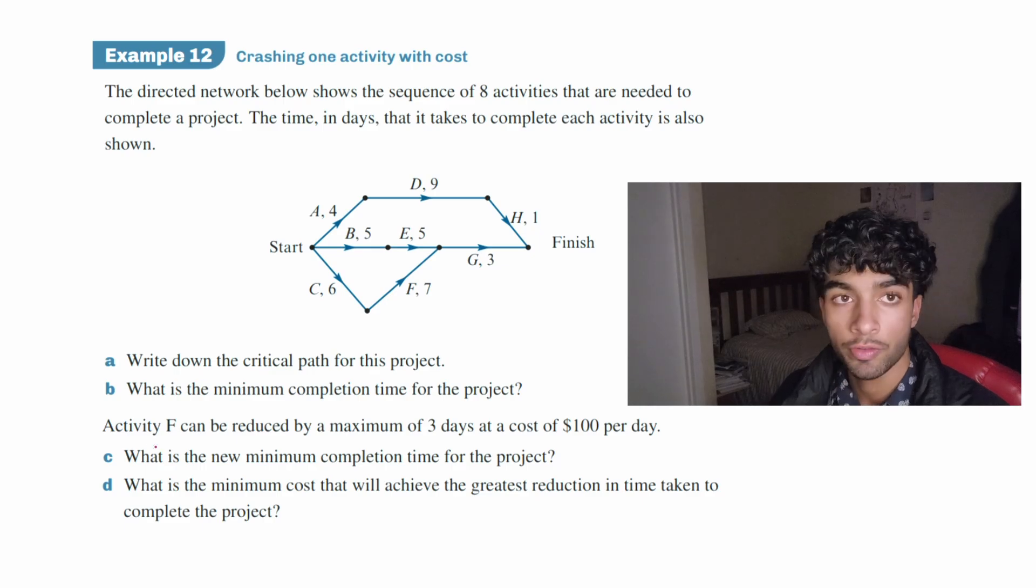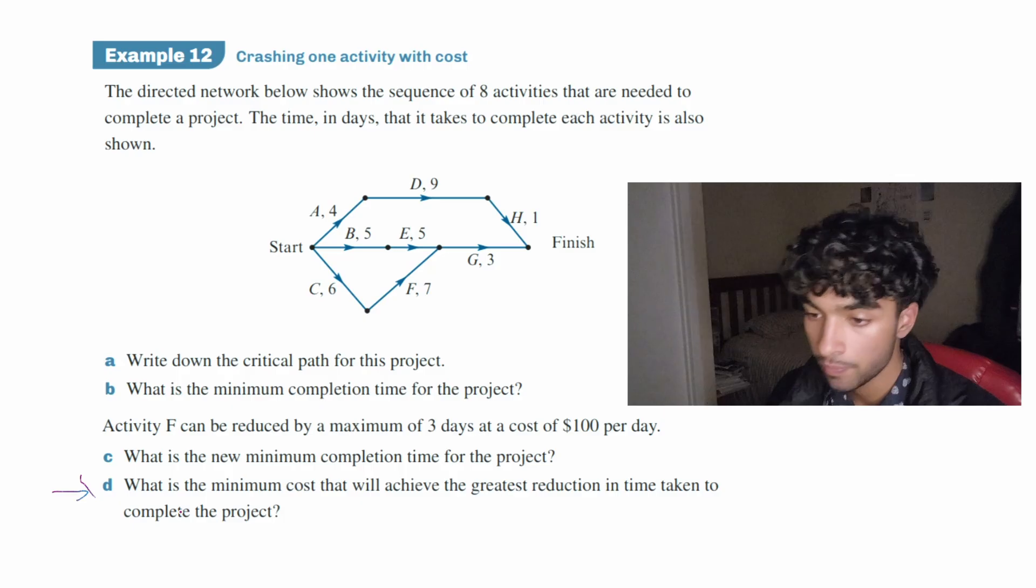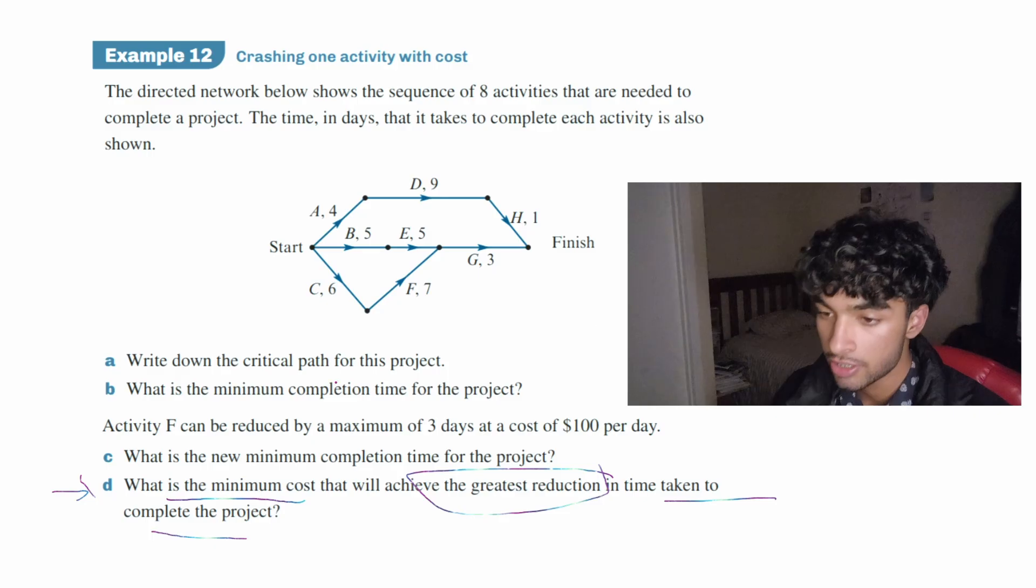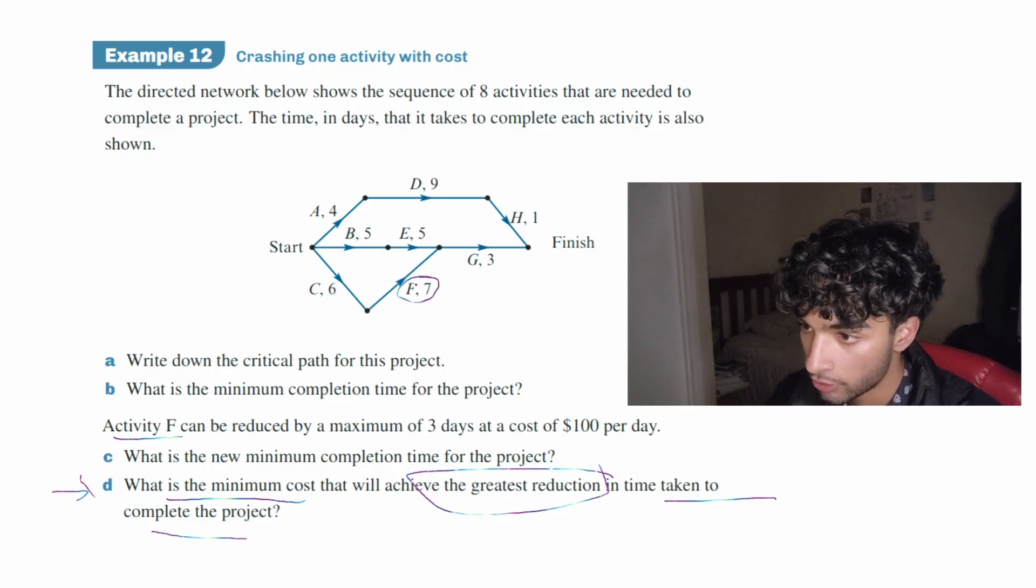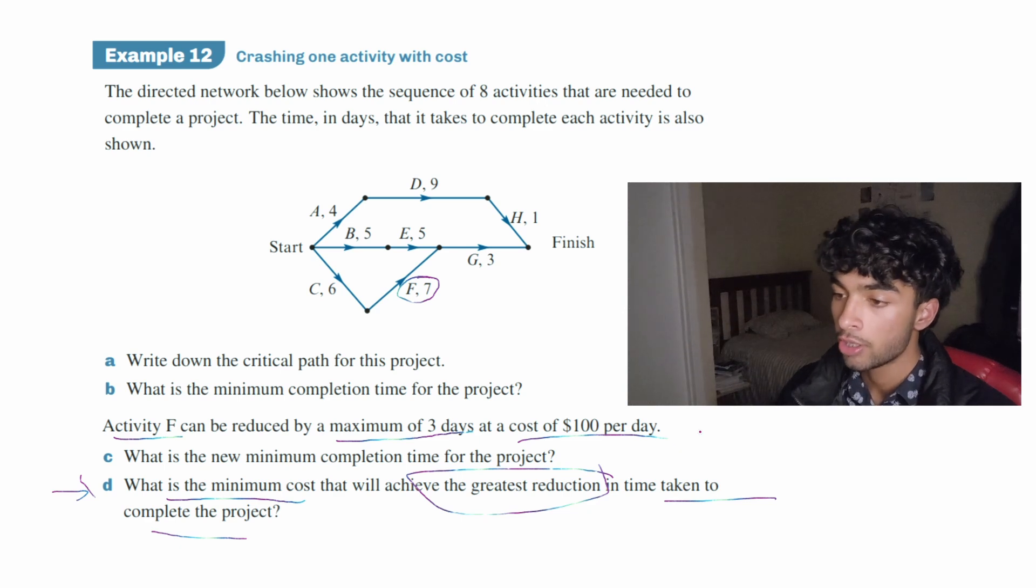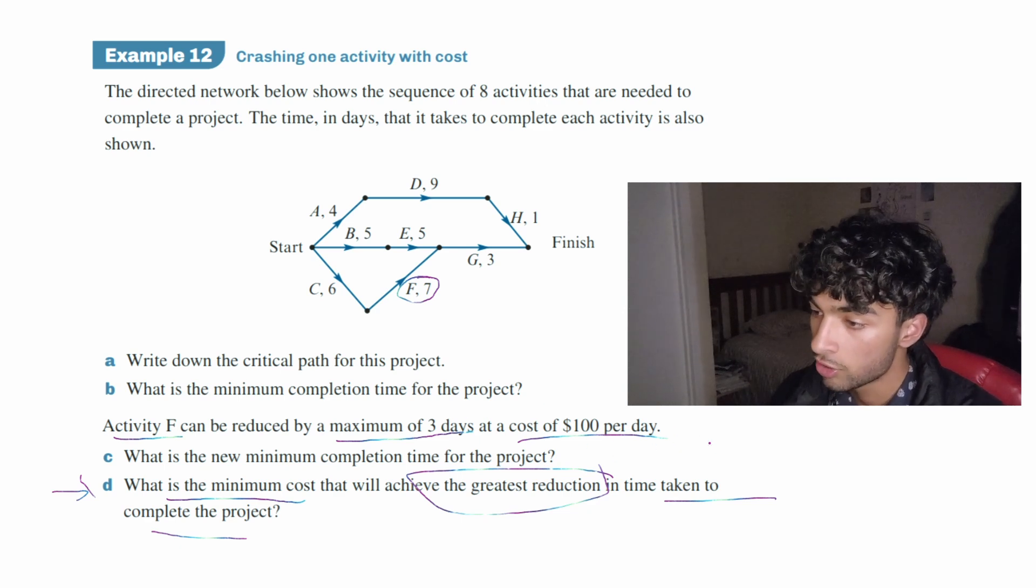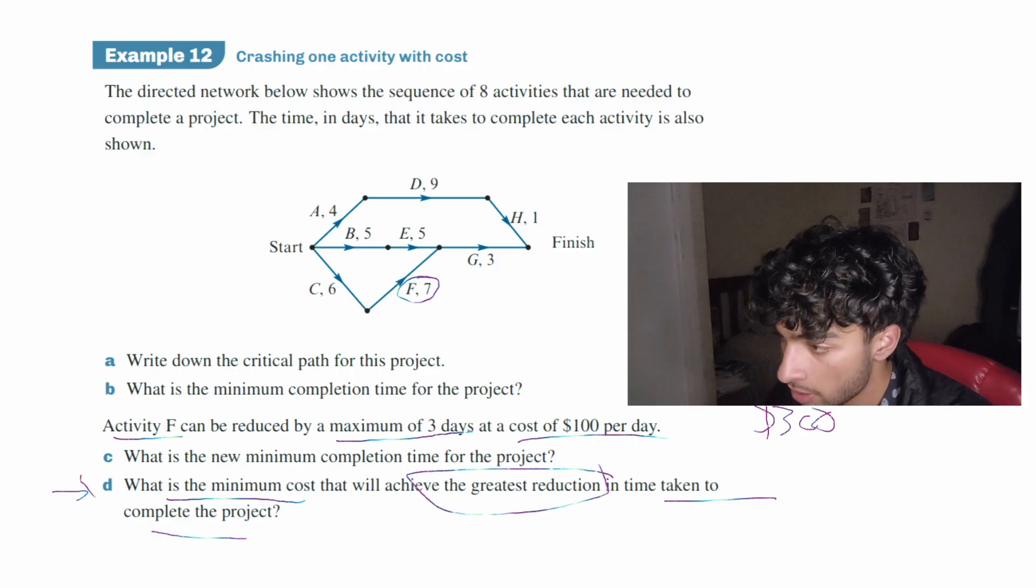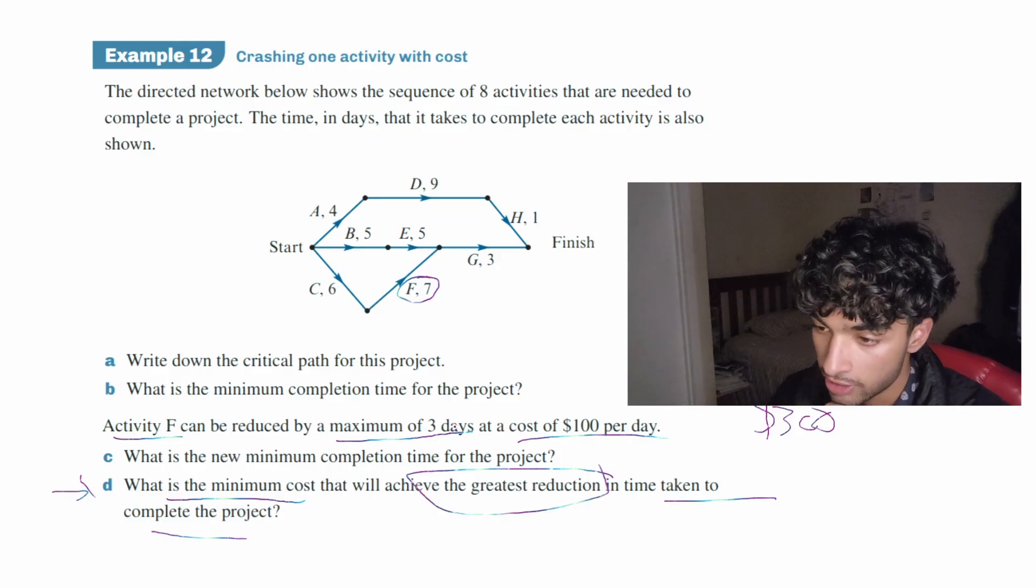So we have a question from the Cambridge textbook and we're going to be doing question D for now. What is the minimum cost that will achieve the greatest reduction in time taken to complete the project? And this is given the information that activity F can be reduced by a maximum of three days at a cost of $100 per day. So the thing is, the maximum will end up costing three times 100, so $300. So if we use up the $300, it actually might not be necessary and we could end up wasting money. So we need to find the minimum cost.